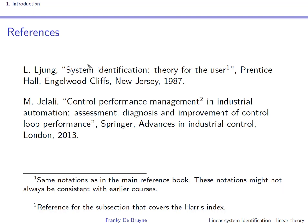The second reference covers the part about control performance monitoring and in particular the ARIES index, which is becoming increasingly important in industry — to assess if a controller gives good performance with respect to the ideal disturbance rejection controller.